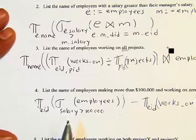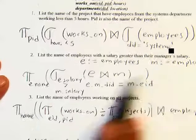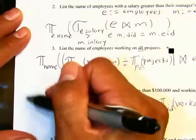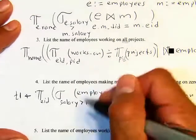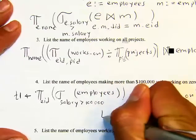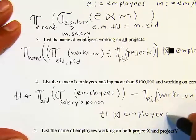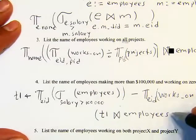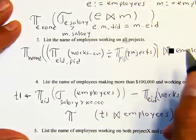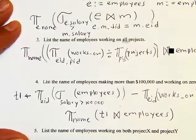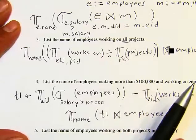We assign that result to T1. Since T1 only has employee IDs, we join T1 with the employees table and then project on name to get the final answer. We can assign this whole expression to 'answer' if we want to be specific, but it's not required.